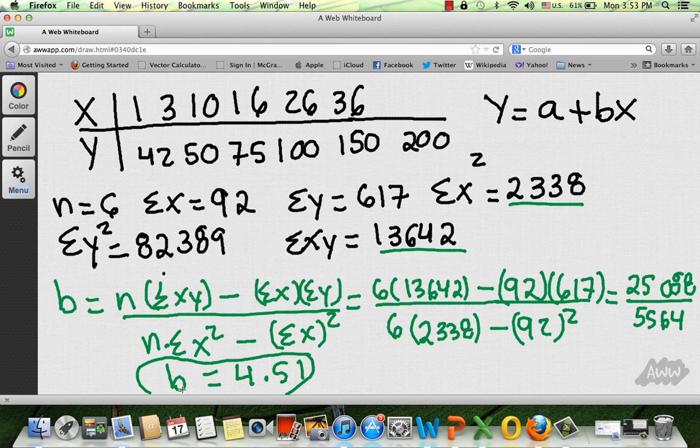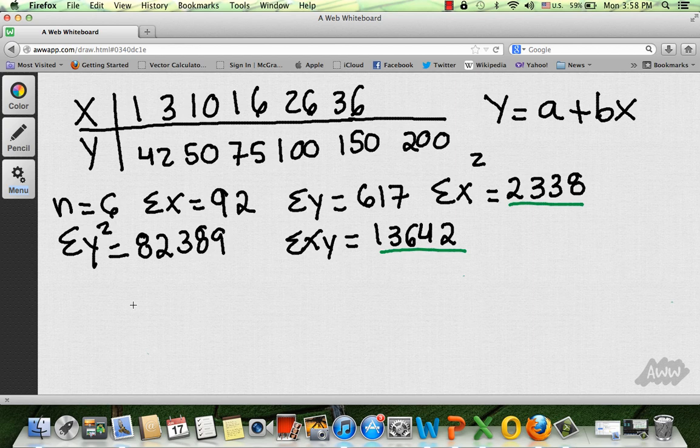Now we're going to go ahead and find a. Now, a is not as complicated as b, but it's still a pain in the neck, but let's do it. a equals y bar, which is the average of y, minus b, which we just calculated that, times x bar. Now first let's go ahead and find y bar and x bar. How do I do that? Well, remember, in order to find the mean of y, you're just going to go ahead and add 42 plus 50 plus 75 plus 100 plus 150 plus 200.